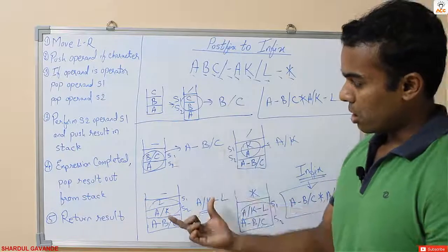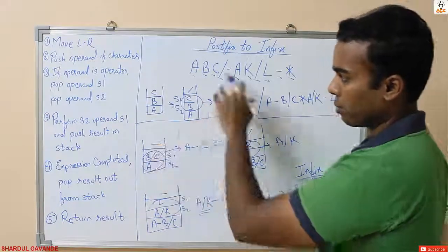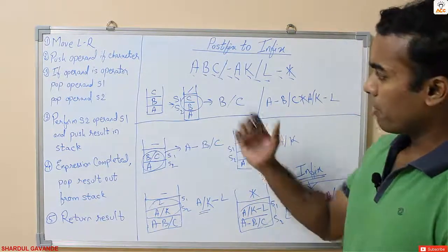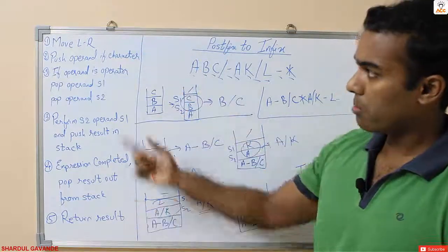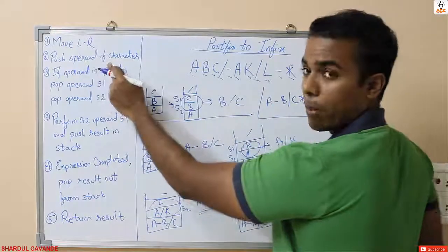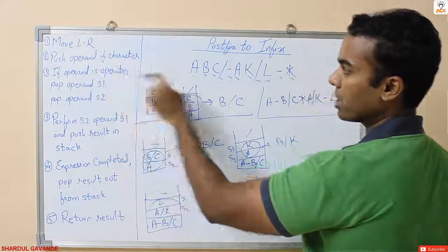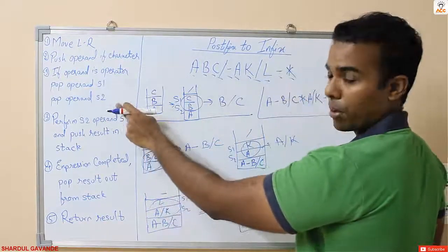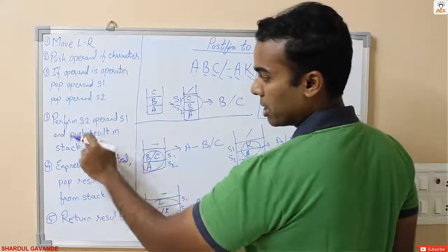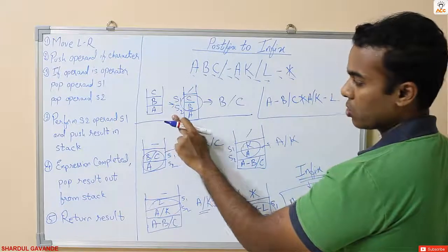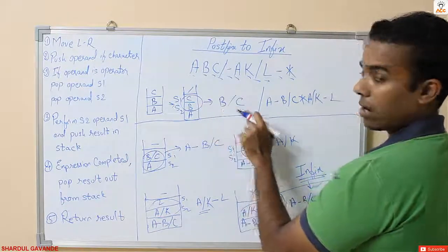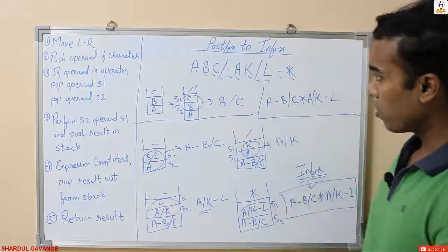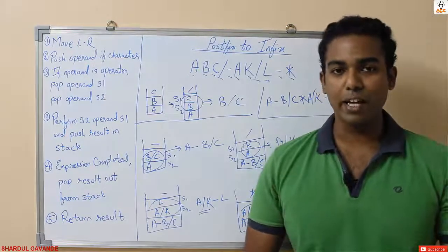That is the reason you have to show your answer by drawing a stack and putting each element to get the final infix expression. To summarize the algorithm: for postfix to infix, move from left to right; push operand if it is a character; if the operand is an operator like plus, minus, multiplication, or division, pop the last two operands s1 and s2, compute s2 operand s1, and push the result back into the stack. That's it for this video — thank you for watching.